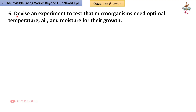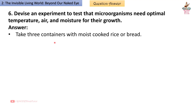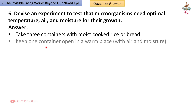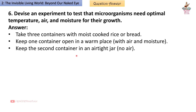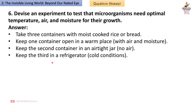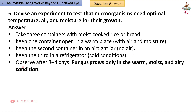Question 6: Devise an experiment to test that microorganisms need optimal temperature, air, and moisture for their growth. Answer: Take three containers with moist cooked rice or bread. Keep one container open in a warm place with air and moisture. Keep the second in an airtight jar (no air). Keep the third in a refrigerator (cold conditions).